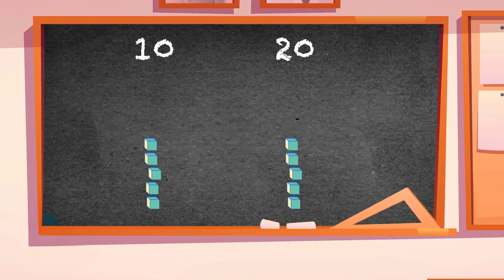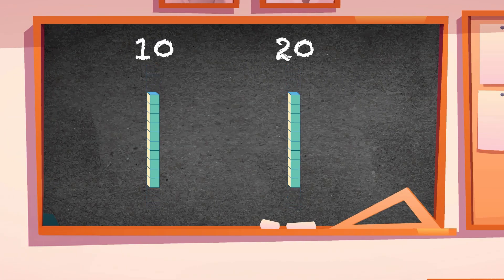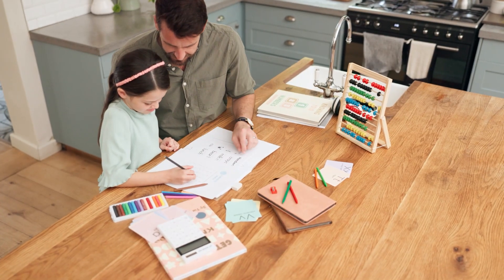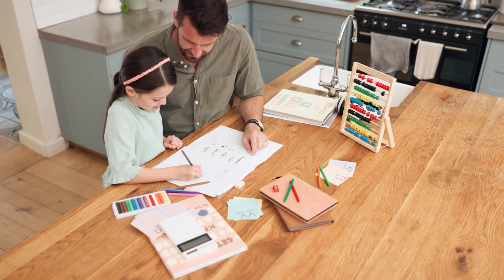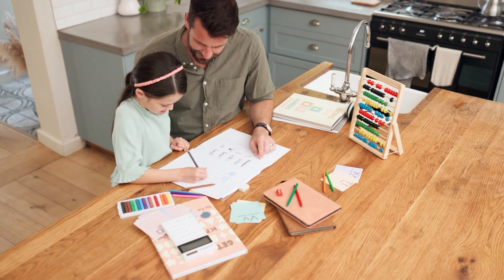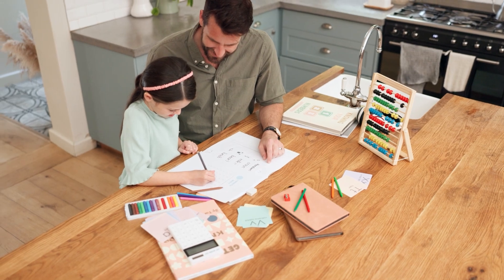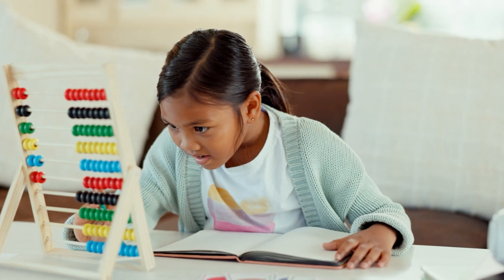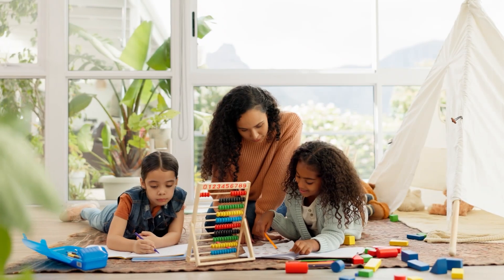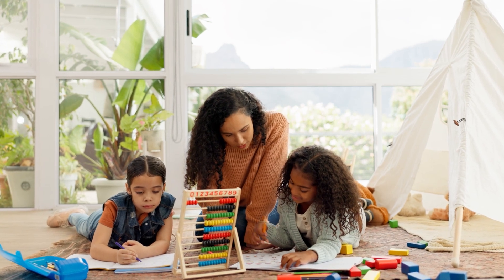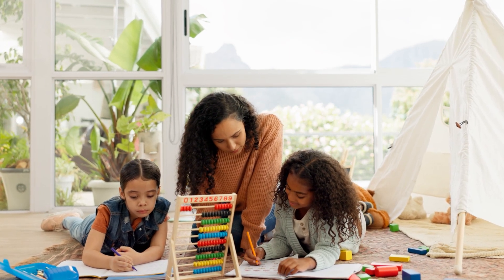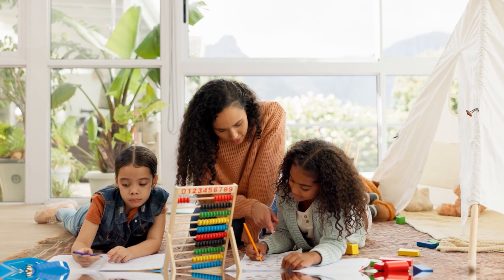Great work, Number Crunchers! Make sure you remember that when you are counting or adding, the numbers 10 to 20 all have one group of 10. Once you have that fact memorized, you will be able to figure out how many ones are left over. Easy peasy!